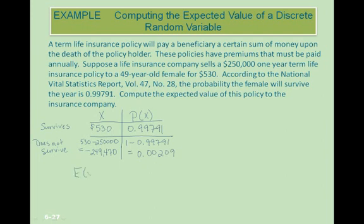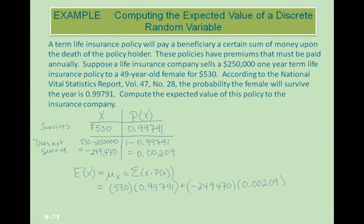The expected value is computed the same way as the mean: the sum of x times P of x. So we take 530 times 0.99791 plus negative 249,470 times 0.00209. When we calculate this, we get a value of $7.50, which is the expected value of the policy to the insurance company.